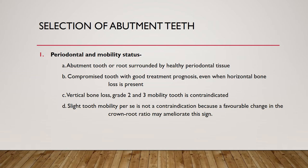Coming to the selection of abutment teeth — a very important aspect of overdenture. It depends on the abutment teeth present, whether canine or premolar, and bilateral placement is always preferred. The first consideration is periodontal status and mobility: the abutment tooth should be surrounded by healthy periodontal tissue. If teeth are preserved but later develop mobility and attachment loss, treatment will fail.